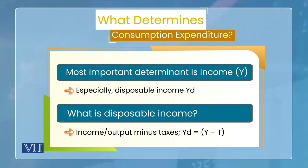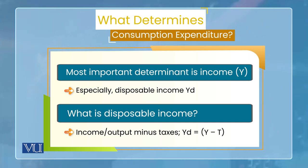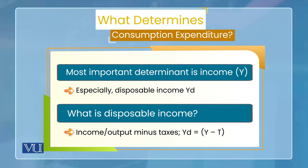तो जो सबसे important determinant होता है consumption का — वो आपके जहन में भी होगा, एक common man के जहन में भी होगा — कि consumption का सबसे बड़ा determinant income होता है। And precisely, income में भी disposable income। Disposable income क्या होता है? जब income में से आप taxes को minus करते हैं, तो बाकी consumable income या disposable income रह जाती है। तो disposable income जो है, वो main determinant है consumption का। Now we are in a position to write the consumption function, because consumption is a function of, or consumption is dependent on, disposable income.